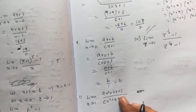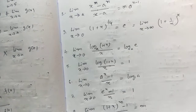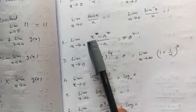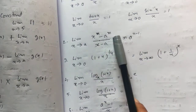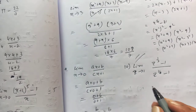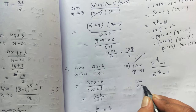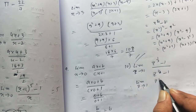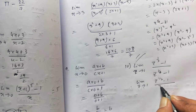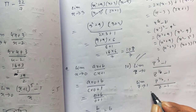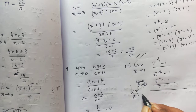Number 10. For doing number 10, we have to use the formula xⁿ − aⁿ / (x − a). I'm showing it. So limit Z tends to 1.